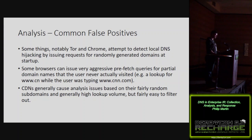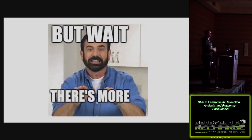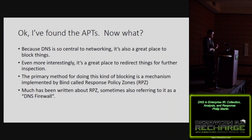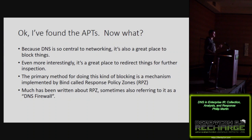Let's talk about response. DNS is amazingly useful for response. Since almost everything uses DNS to look up where to go for a given name, it's a great place to block things or redirect them to somewhere you can control and analyze. The primary way to do this is something BIND introduced in version 9.8 called RPZ — Response Policy Zones, sometimes called the DNS firewall.